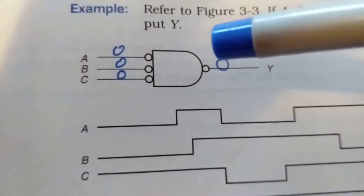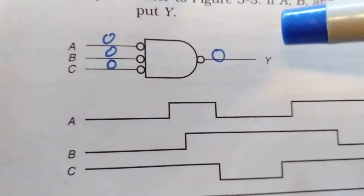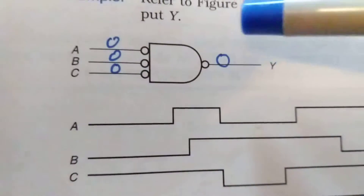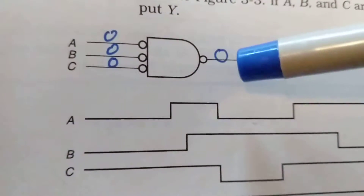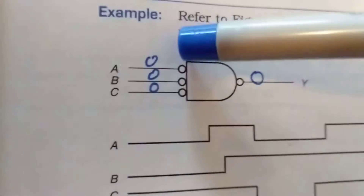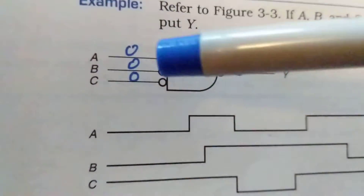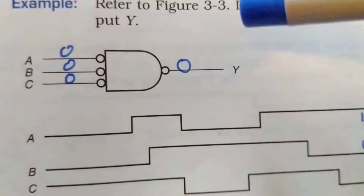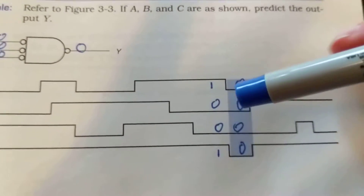With the OR gate, if all of them are zeros then the output is zero. Going the other way: if any one of them is a one the output is one. The bubble tells us it's a zero — we need a zero. For input A we got a zero, for B we got a zero, for C we got a zero. When we have all zeros, the output is a zero.